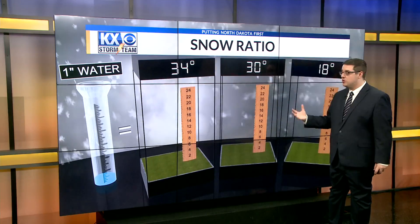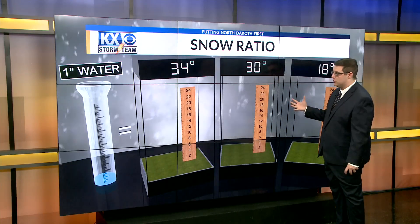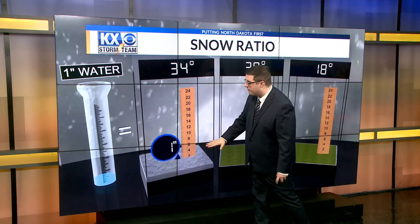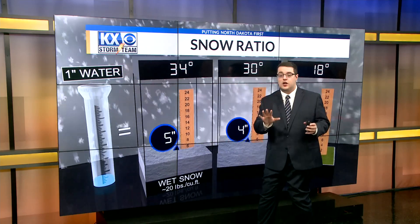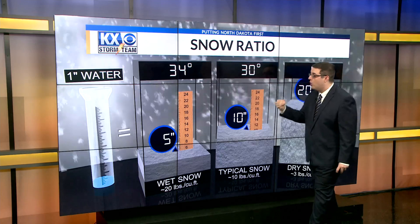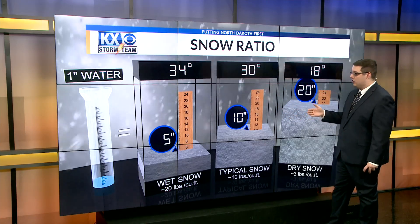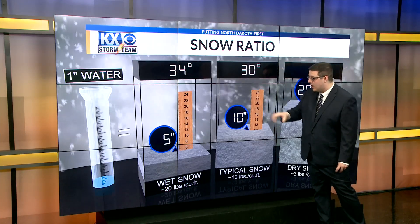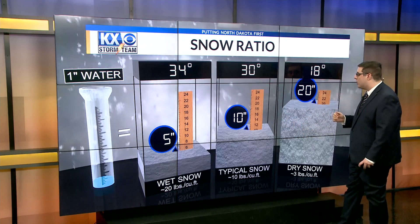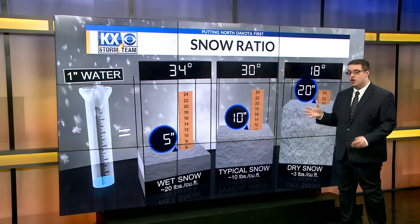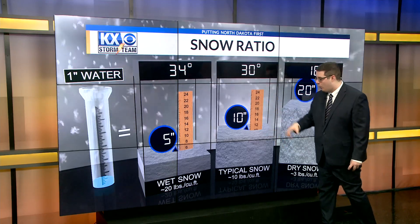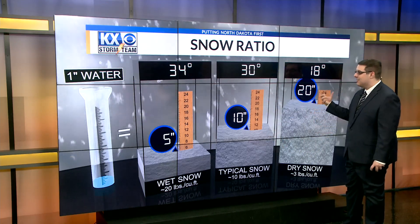What determines snow ratio? It's usually our temperatures. When we get to about 34 degrees, one inch of water means we'll get about five inches of snow — that's what we consider our wet snow. The warmer the temperatures, the wetter the snow will be. At 30 degrees you're looking at the typical ratio of 10 to one, that's 10 inches of snow to one inch of water. At 18 degrees you start to get a drier snow, so you're looking at 20 inches of snow for one inch of water, giving us that dry, lighter snow.